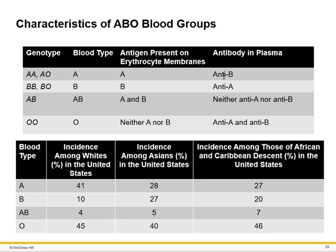Because you're exposed to these antigens in the normal environment, if you're Type A your body produces anti-B antibodies — the clone that would produce anti-A antibodies has been deleted because A is a self-antigen. Type B blood has deleted the clone for B but still produces anti-A antibodies. Type AB has neither anti-A nor anti-B antibodies. Type O has deleted neither clone, so you have both anti-A and anti-B antibodies in your blood.